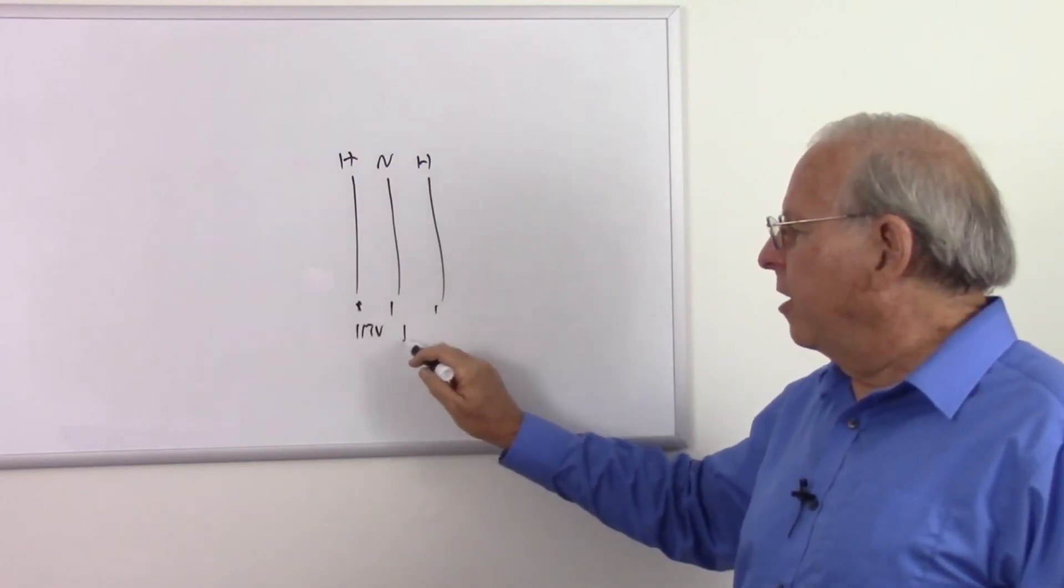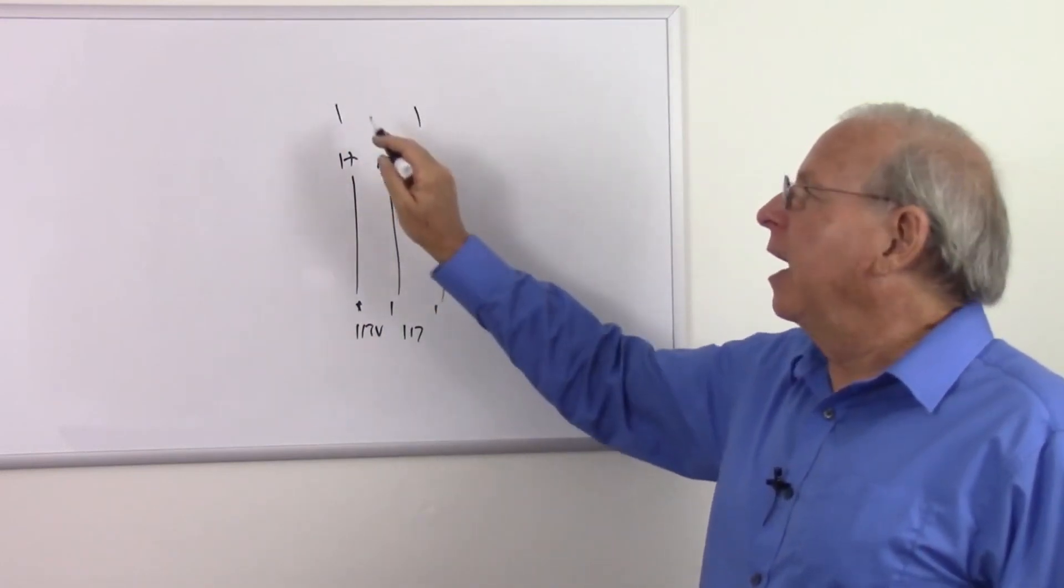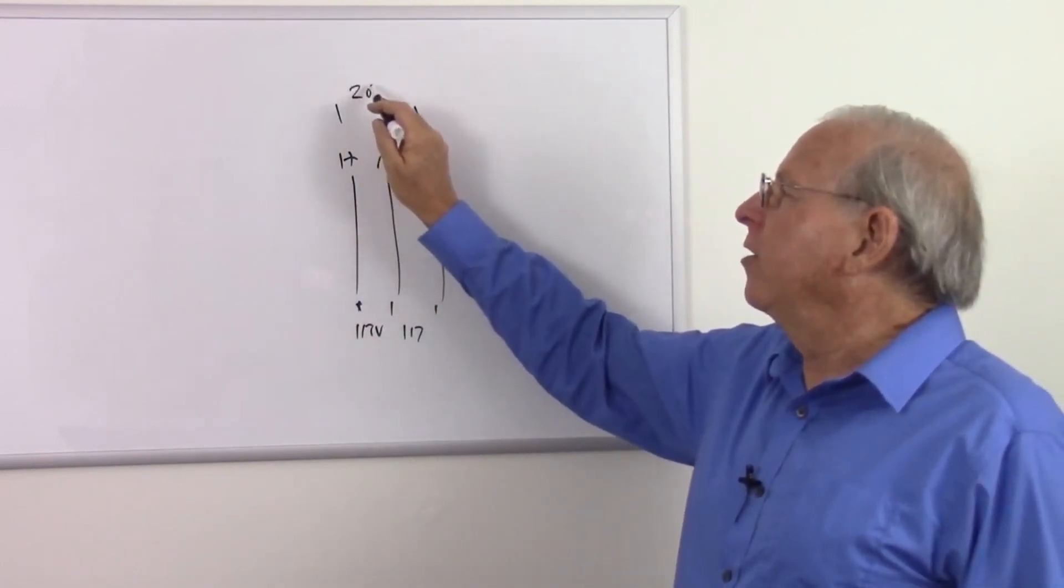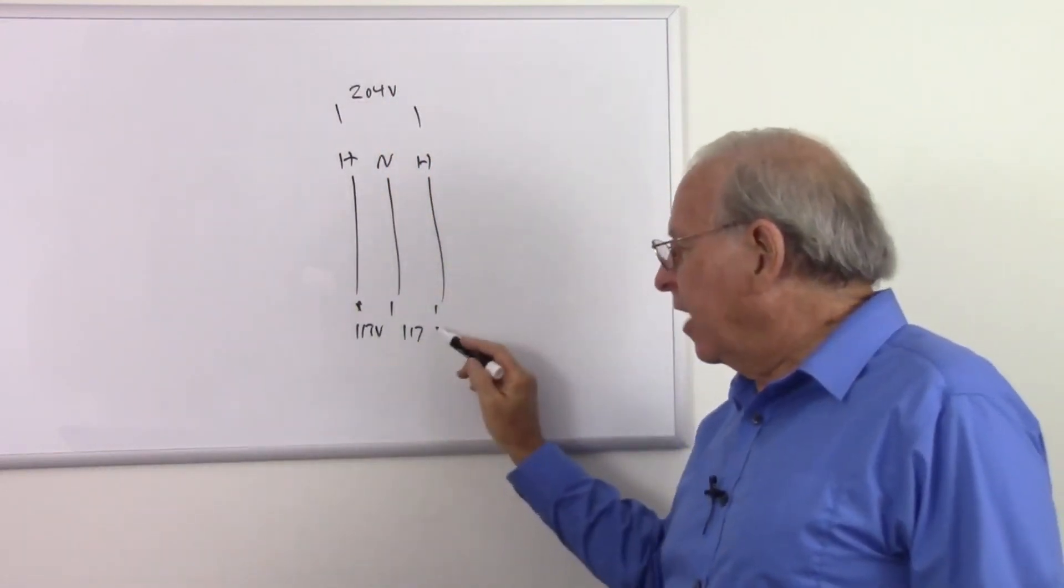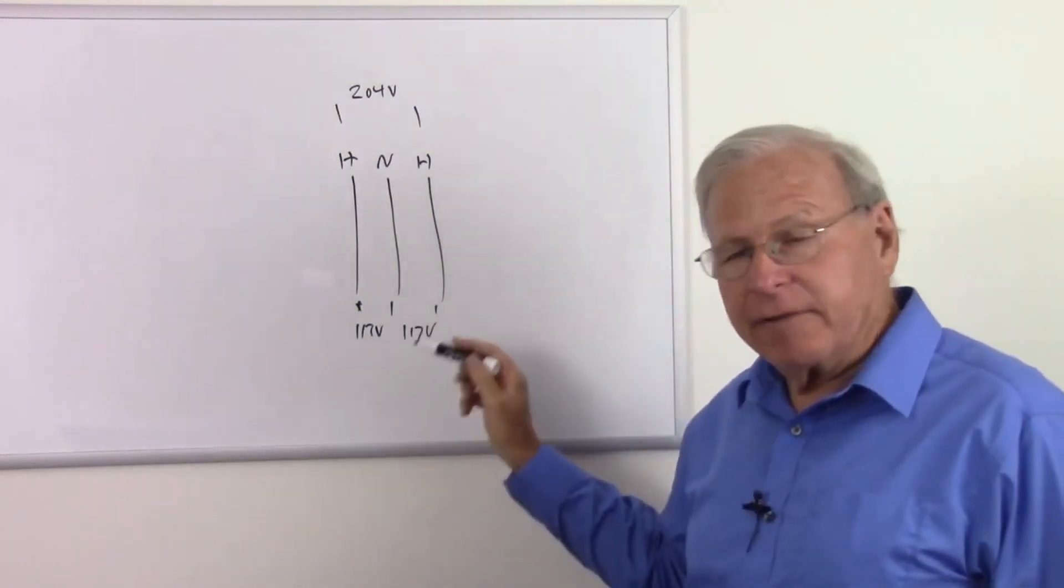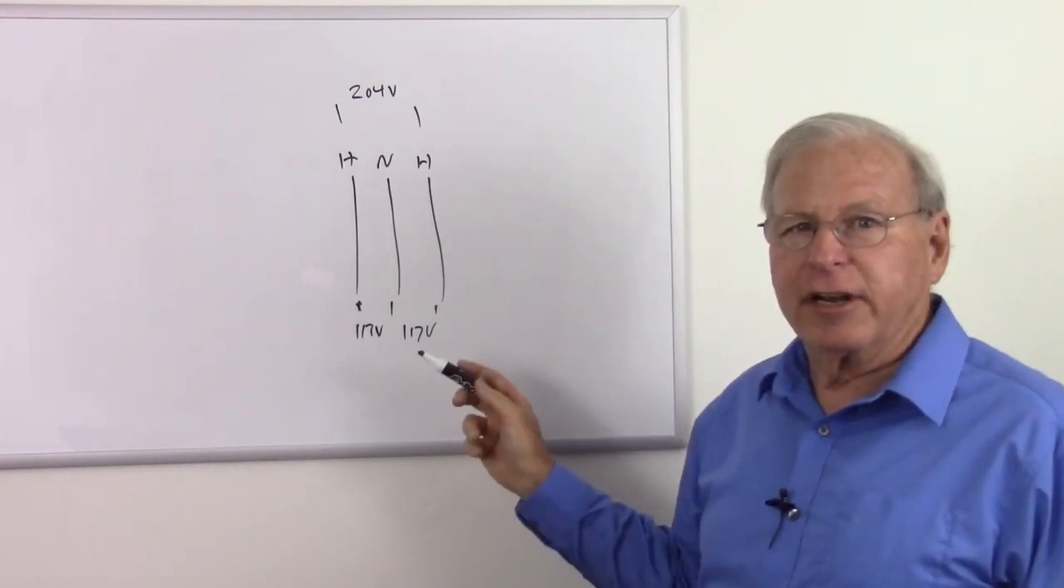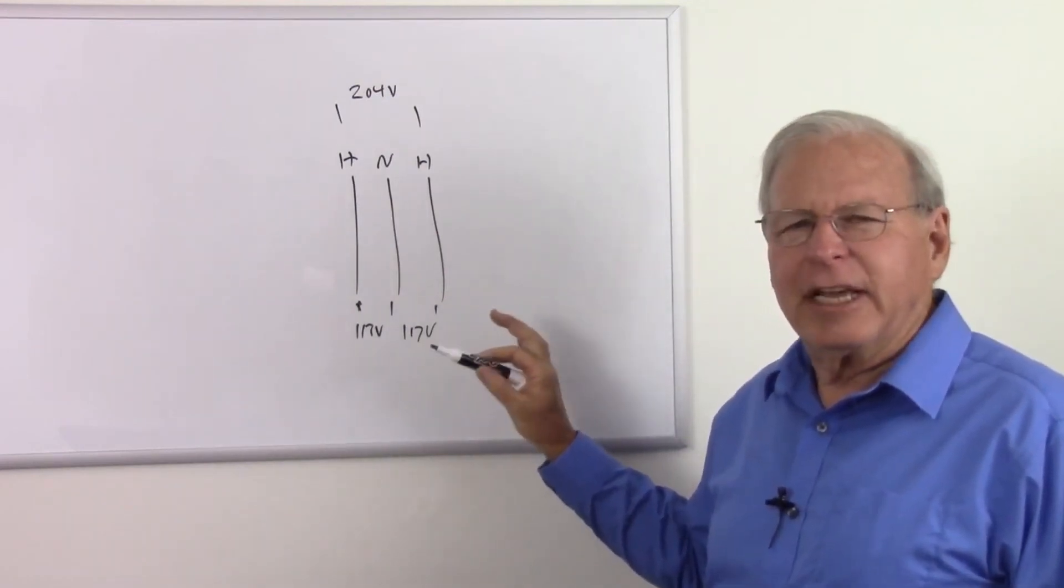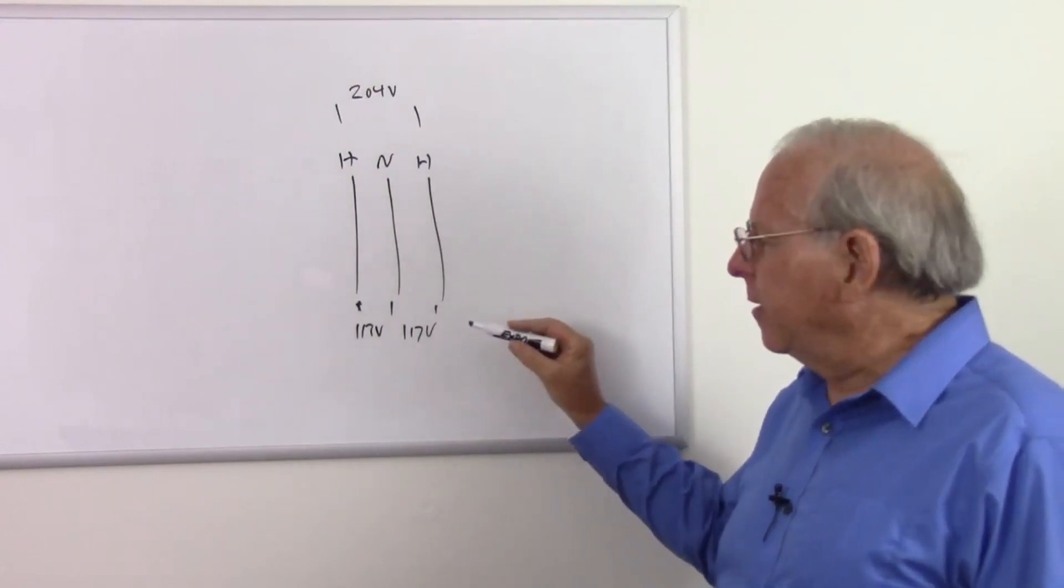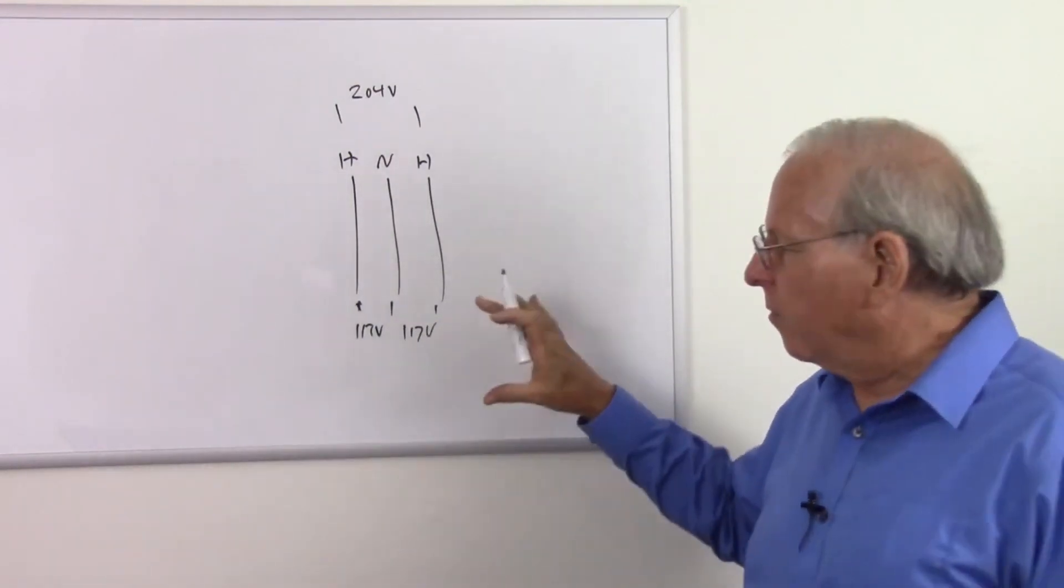And between here and here, I measured 117 volts. But between the two of them, I measured 204 volts. And knowing that this is the standard in the area I live in, 117 volts, that's a standard in a number of areas. They call it 110 or 120. It actually can be anywhere from 110 to 126 volts, I think, and still be within standards.